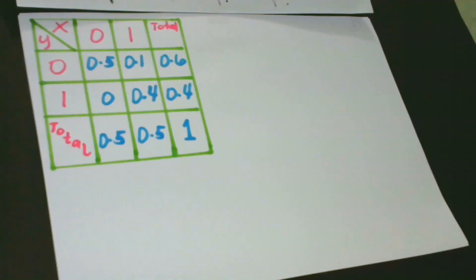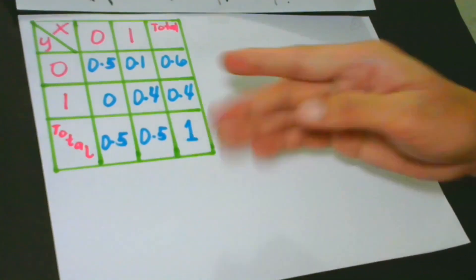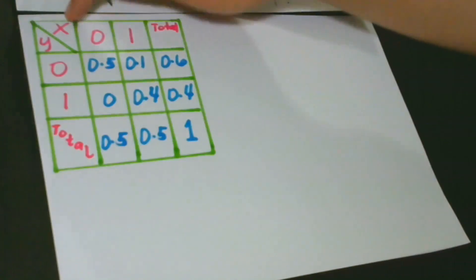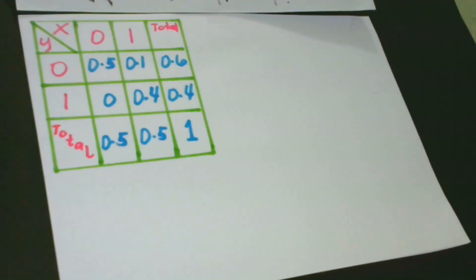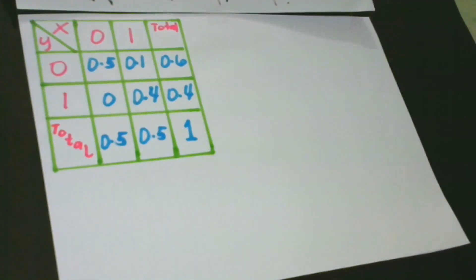The values of X are 0.5 and 0.5. Without referring to one another, we can actually find the values of X and Y, respectively. The values of Y are 0.6 and 0.4.